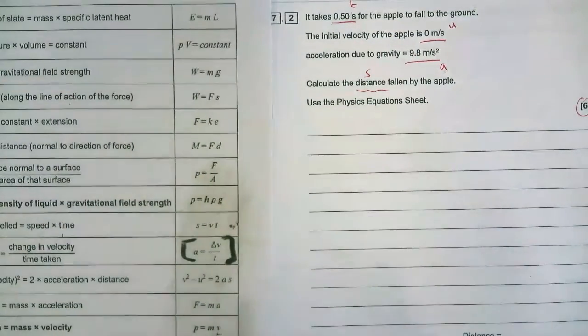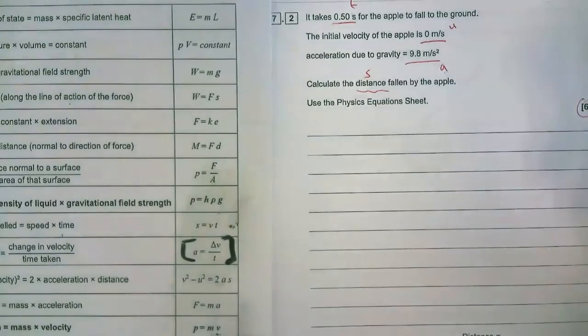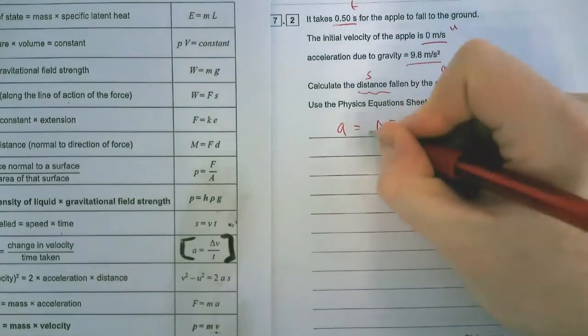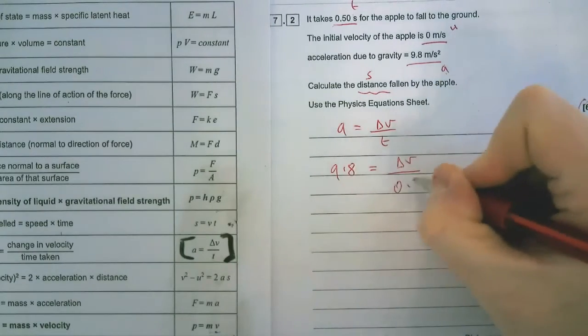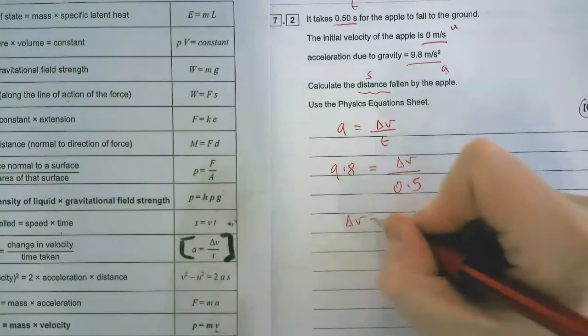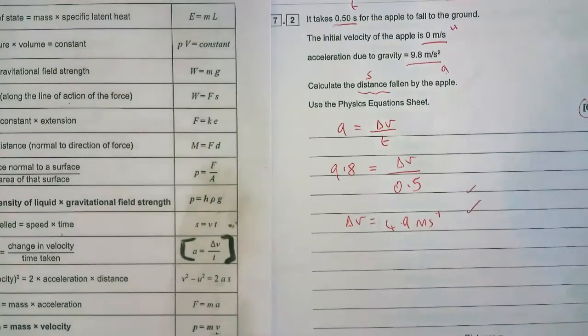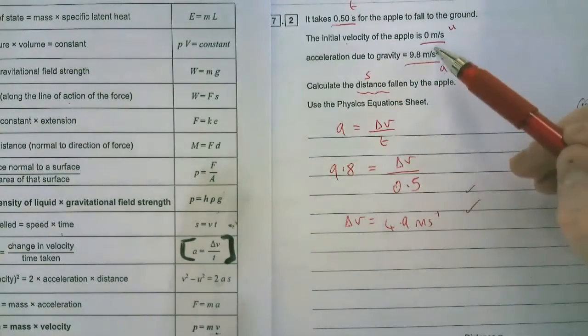So one thing we can do is to use the acceleration to work out the change in velocity. It tells us the initial velocity, it doesn't tell us the final velocity. So let's put our numbers into that. 9.8 equals change of velocity over 0.5. The change of velocity happens to be 4.9 meters per second. That gives us a couple of marks already.